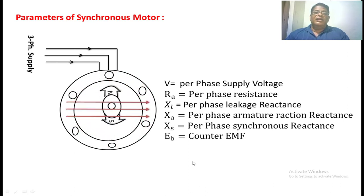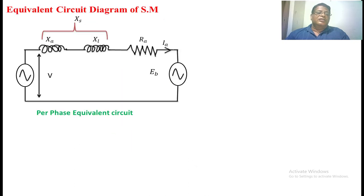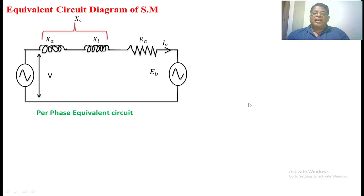Now we are going to draw the equivalent circuit of the synchronous motor. In this equivalent circuit, we have the supply voltage, then Xa, then XL — the sum of these two is nothing but the synchronous reactance — followed by the armature resistance RA, and then the counter EMF Eb. IA is the armature current.